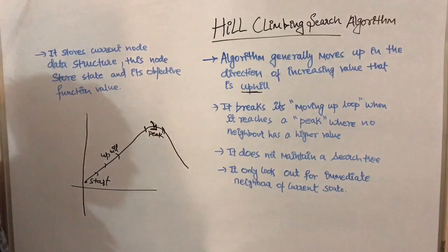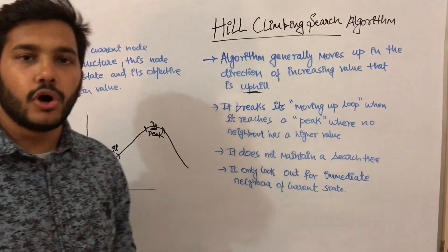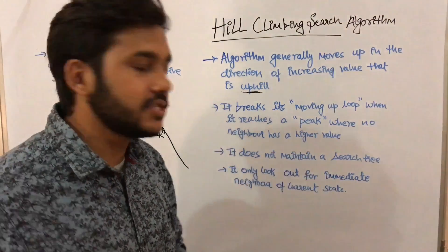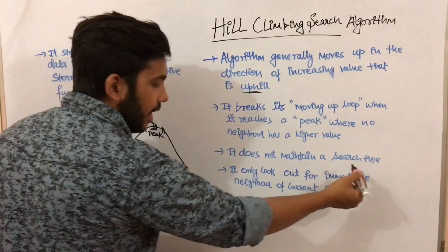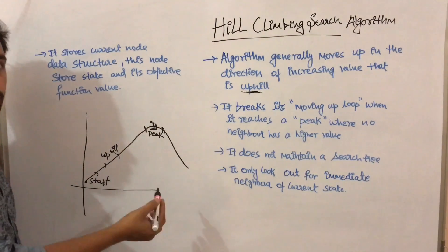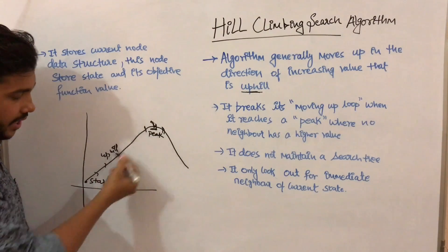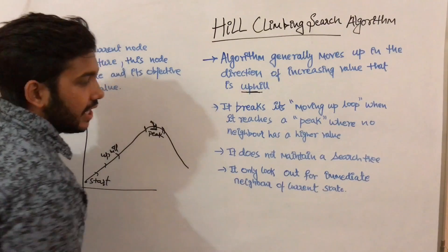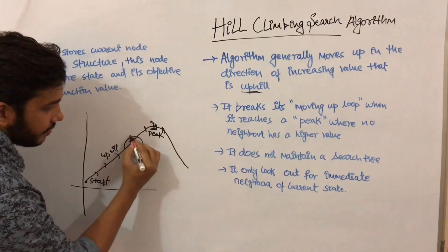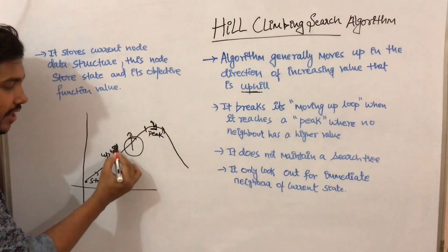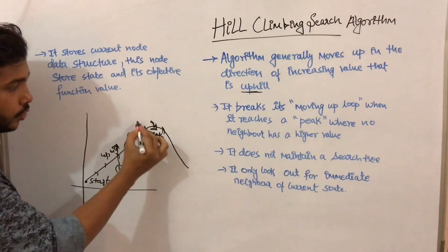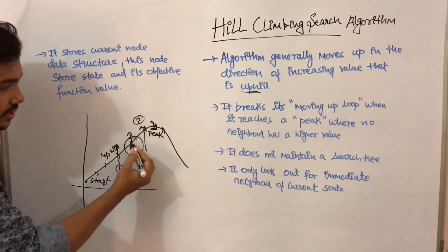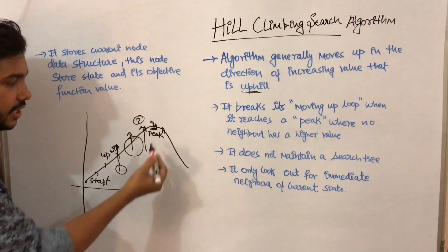Hill climbing does not maintain a search tree, unlike the A* algorithm which does maintain a search tree. It only looks at the immediate neighbor of the current state. This algorithm does not store all the values in the search graph — it only maintains the immediate neighbor of the current state. Suppose we are at this point; it will only maintain two values — the first value and the second value — storing only the two immediate neighbor values.